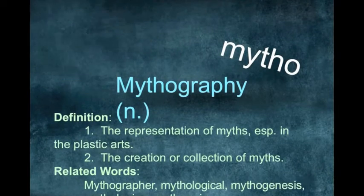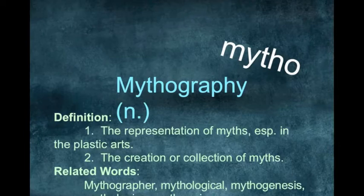The second root is mytho. Mytho means myth. Mythography is the creation or collection of myths. Related words: mythographer is the writer or collector of myths. Another word, mythogenesis, is the origin of myths. So all the words have mytho in them, so they are all related to myths.